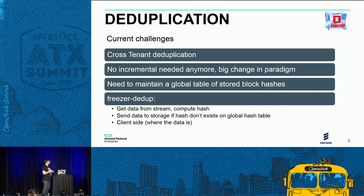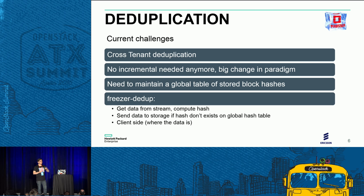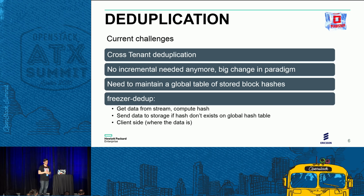Another cool thing we are working on is deduplication. Any real enterprise-grade advanced backup solution provides deduplication — that is the reality. The first challenge is how to achieve cross-tenant deduplication. If another tenant completely unrelated to the current tenant has a block of data that is exactly the same as yours, deduplication still happens. If we implement this successfully, there is no longer a need to use incrementals, which is quite a big paradigm change.